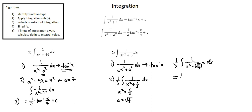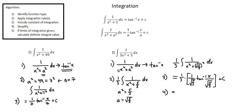Now applying our integration rule, we have 1 over 3 times, using the second rule at the top of the screen: 1 over a, where a is root(5/3), times inverse tangent of x over a, which is x over root(5/3), plus c. This completes step 3. Step 4: simplify. We have 1 third times 1 over root(5/3), which equals root(3/5), times inverse tangent of root(3/5) times x, plus c.